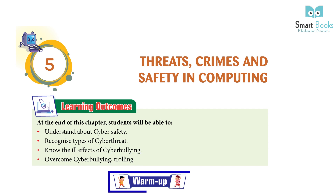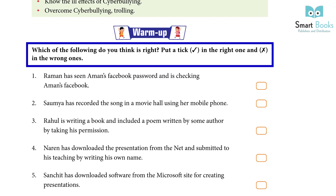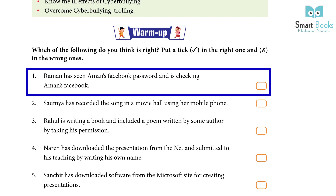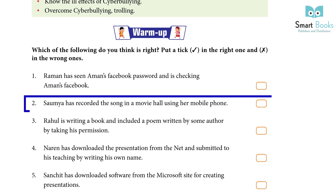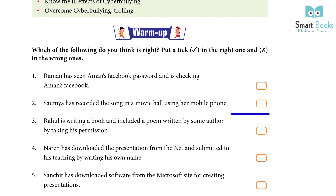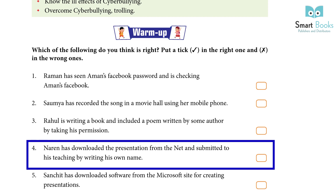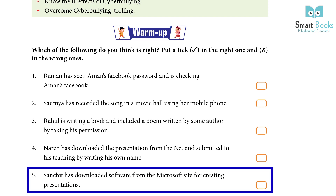Warm up: Which of the following do you think is right? Put a tick in the right one and cross in the wrong ones. 1. Raman has seen Aman's Facebook password and is checking Aman's Facebook. 2. Soumya has recorded a song in a movie hall using her mobile phone. 3. Rahul is writing a book and included a poem written by some author by taking his permission. 4. Naren has downloaded a presentation from the internet and submitted it to his teacher by writing his own name. 5. Sanchit has downloaded software from the Microsoft site for creating a presentation.